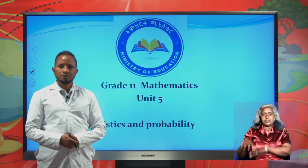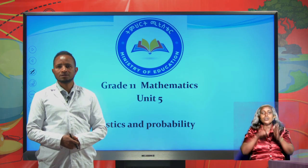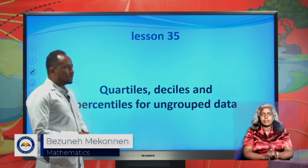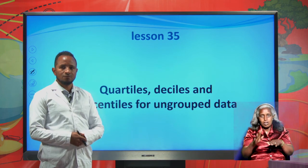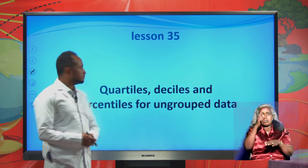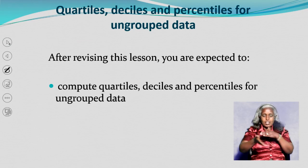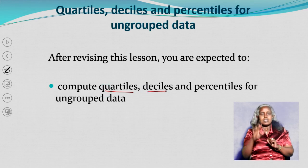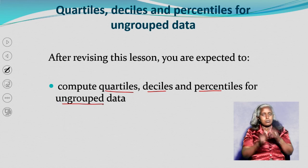Hello, dear students. This is a grade 11 mathematics lesson on unit 5, sub-unit 6: probability. Today we will focus on quartiles, deciles, and percentiles for ungrouped data. After completing this lesson, you are expected to compute quartiles, deciles, and percentiles for ungrouped data. So let's continue to the lesson.